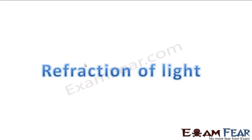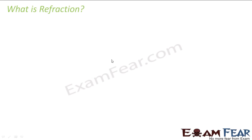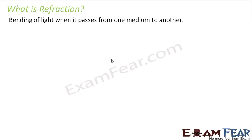Refraction of light is another beautiful phenomenon of light. We will see what happens in refraction in the next few slides. Till now we spoke about reflection of light, which meant the bouncing back of light when it strikes a boundary between two media. Refraction is the bending of light when it passes from one medium to another — so there is no bouncing back. Light passes through but the ray bends a little. That is known as refraction of light.